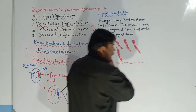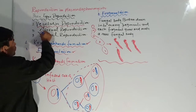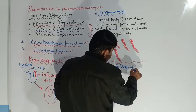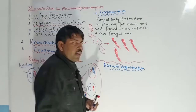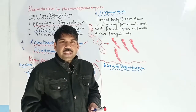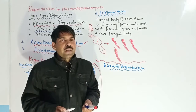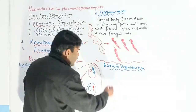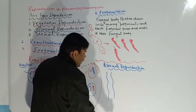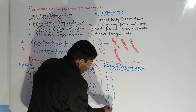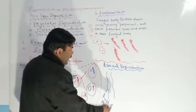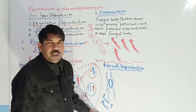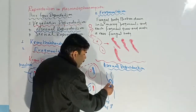After vegetative reproduction, we will discuss asexual reproduction. As we know, the fungi are obligate parasites — they need a living host for their reproduction and survival. Because they are obligate parasites, they live in plant tissues. For example, this is a root of a plant, and this is the cell of Plasmodiophora present inside the root. This cell divides mitotically.